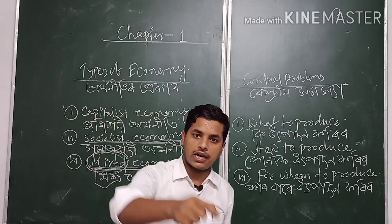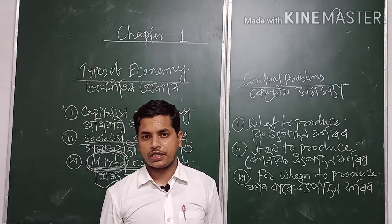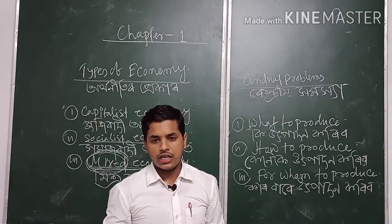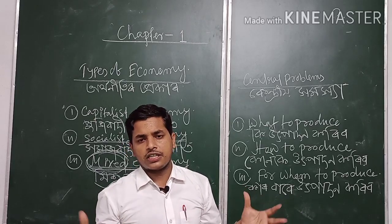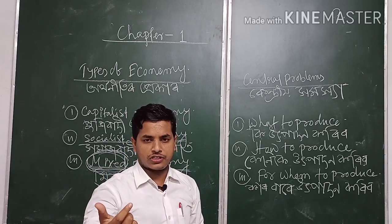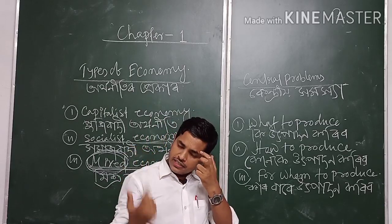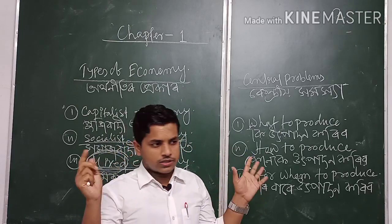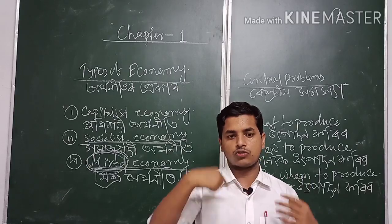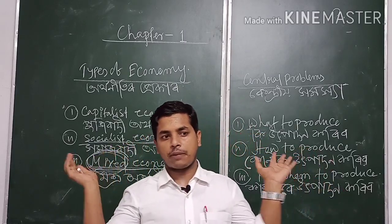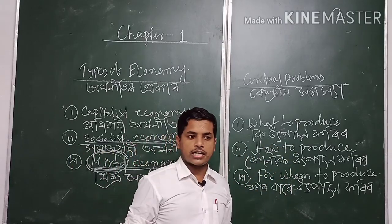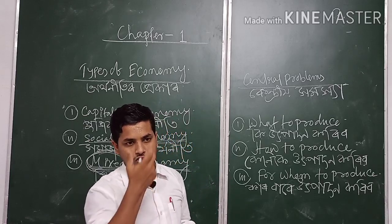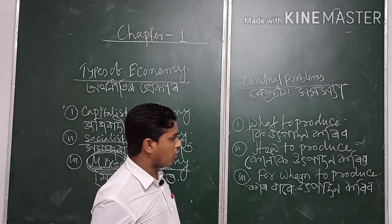Labor intensive means producing by using labor, and capital intensive means producing by using capital. So we have to select the most available technique. For example, if our country has abundant labor, then we have to select the labor intensive technique. And if our country has abundant capital, then we have to select capital intensive technology. This problem of selecting the kind of technology we will use is the problem of how to produce.